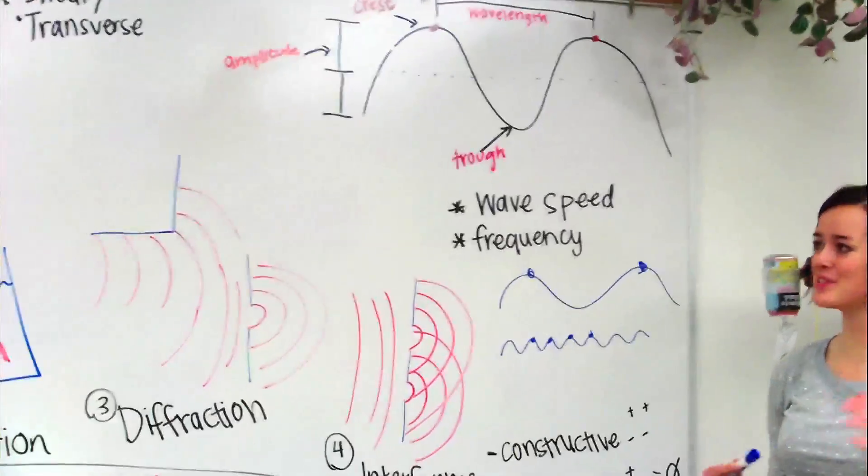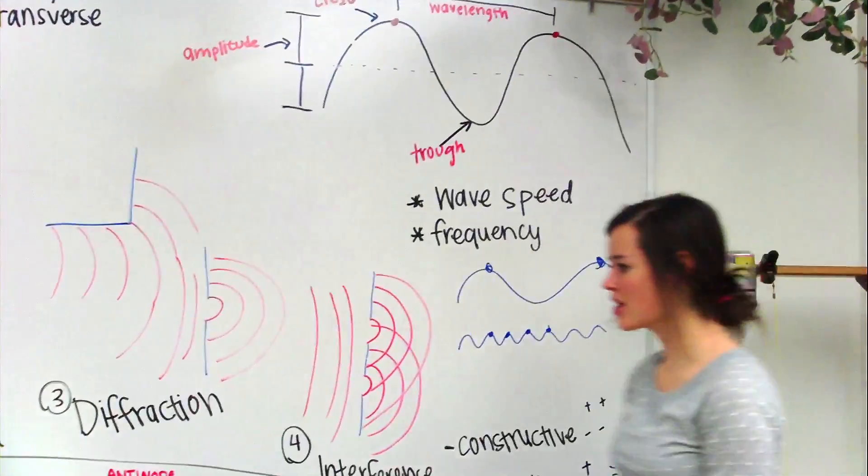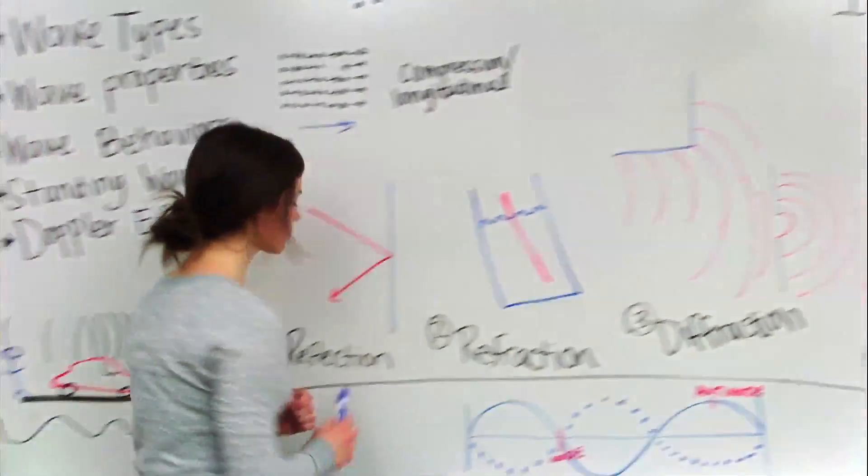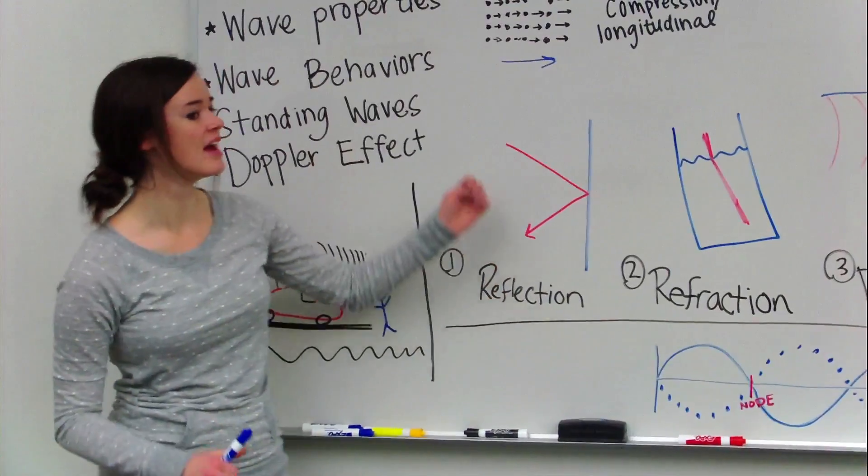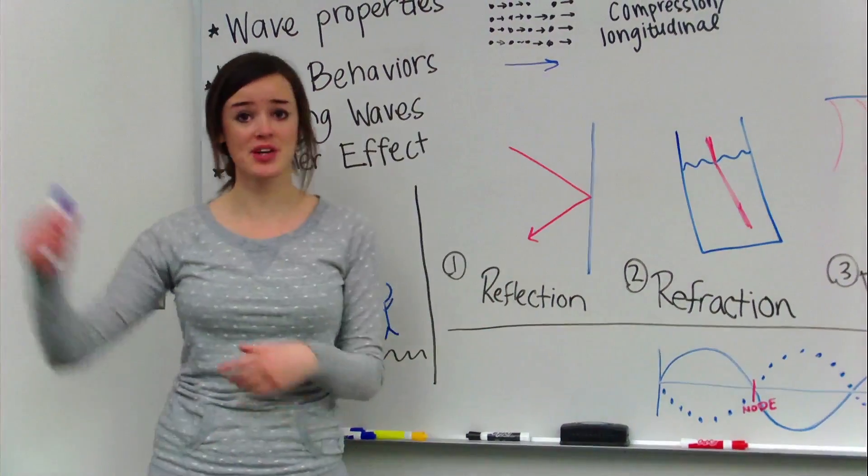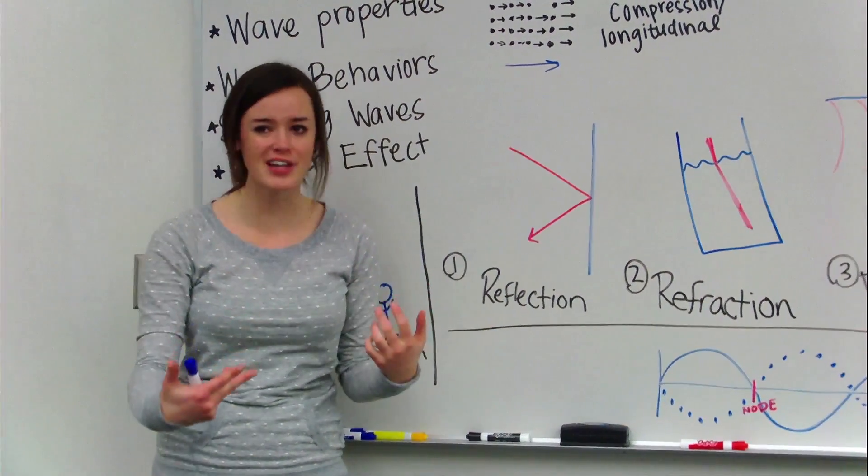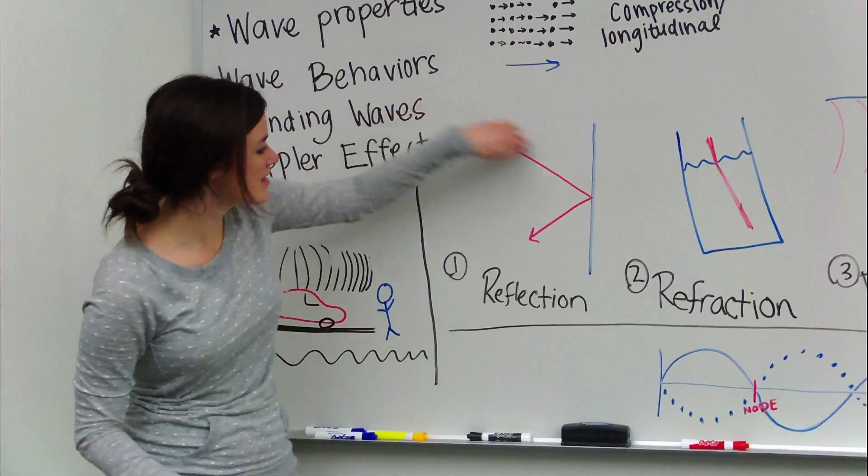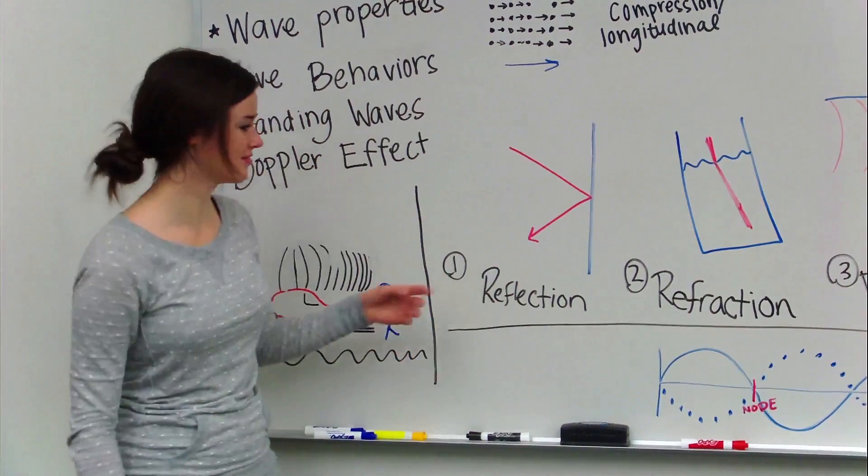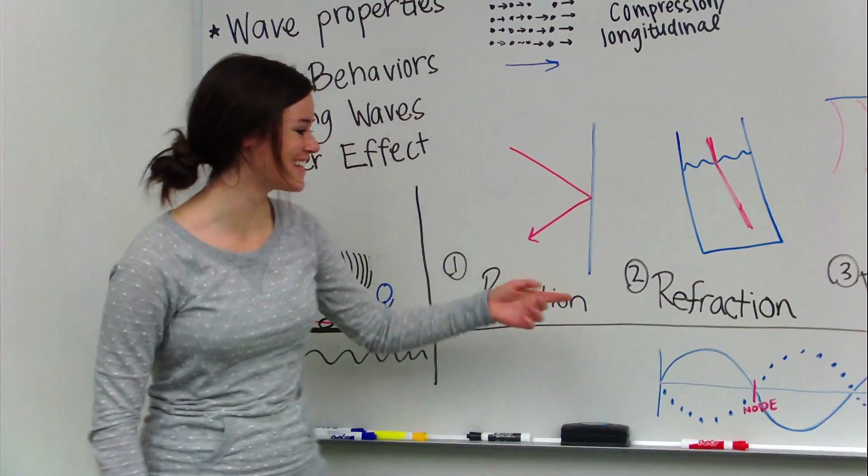The next thing we're going to do is wave behaviors. So, there's four things down here. The first one is reflection. As a wave travels, sometimes it'll hit something like a mirror. You see this every day when you go look in the mirror. It hits the mirror and it reflects right off. Just showing for a mirror what you can see.